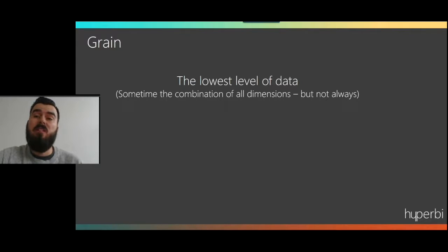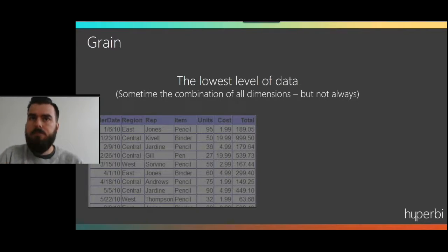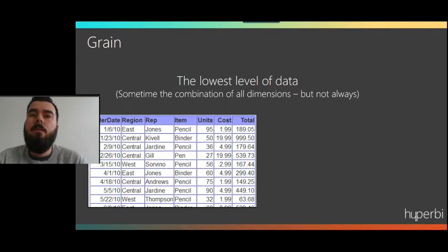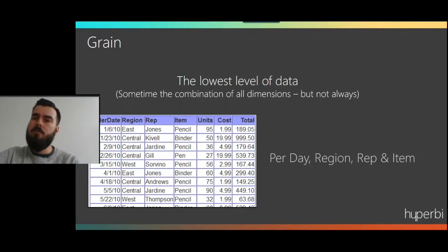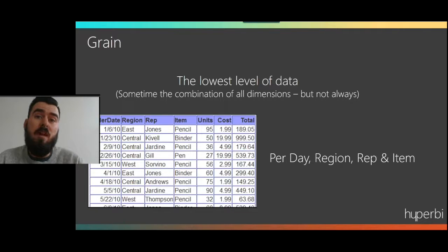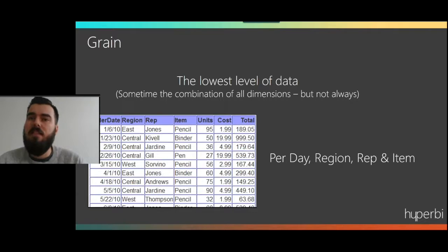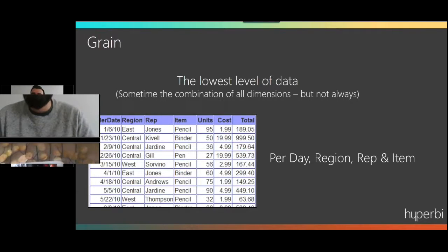The main thing that we also need to think about is the grain of our data. We need to work out at what grain our data is. Generally, you can think of this almost as a combination of all of our dimensions — everything that describes our data, but not always. This one is probably a good example, because our grain is of the date, region, rep and item. Cost is an attribute, it's not a dimension, so it doesn't alter our grain. If our cost was different it may do, but for this it doesn't.